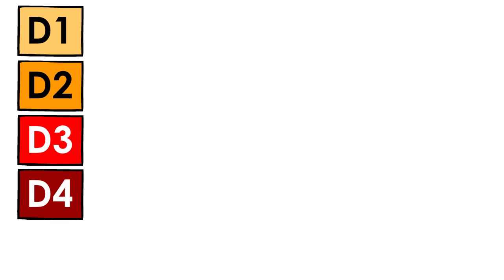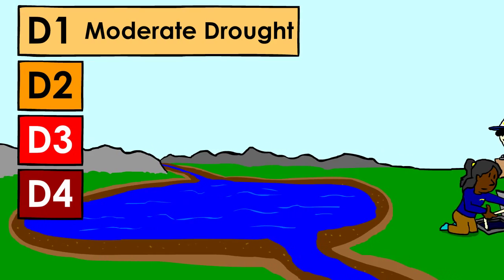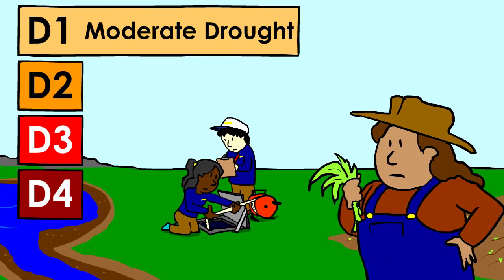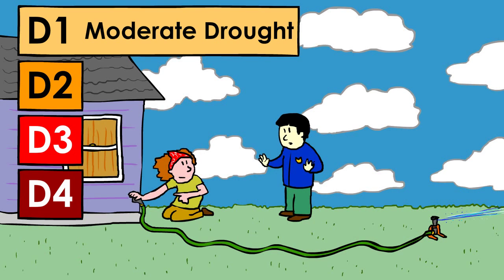D1 would indicate moderate drought conditions. You may notice lower stream, lake, and well levels, and perhaps some damage to crops. There may be requests to curb water usage from local authorities.